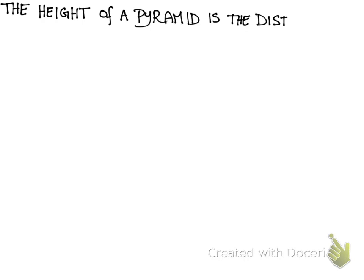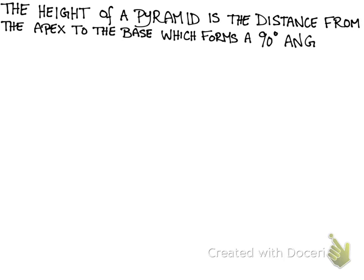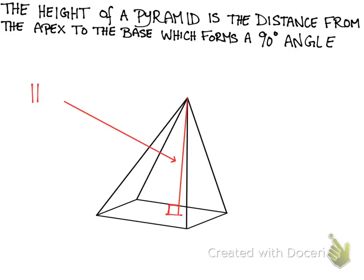The height of a pyramid is the distance from the apex to the base and must form a 90 degree angle. This red line I drew forms a 90 degree angle with the base and it stems from the apex, so we call this the height. Another word for height is altitude.